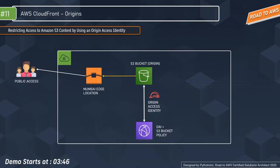We can give privileges to the OAI by changing permissions either on your S3 bucket or on the files in your bucket, so that only the origin access identity has read permission to download the object. When you combine OAI with an S3 bucket policy, you can restrict users from accessing your content served on your origin.